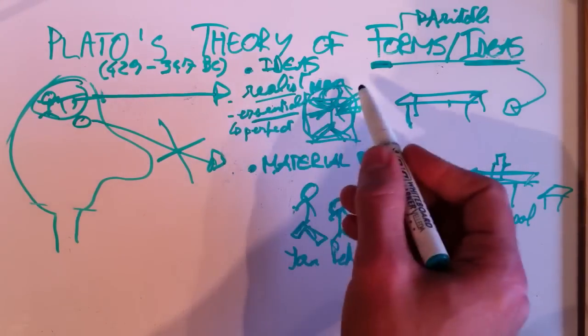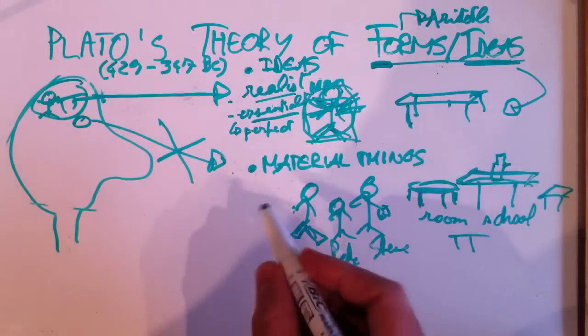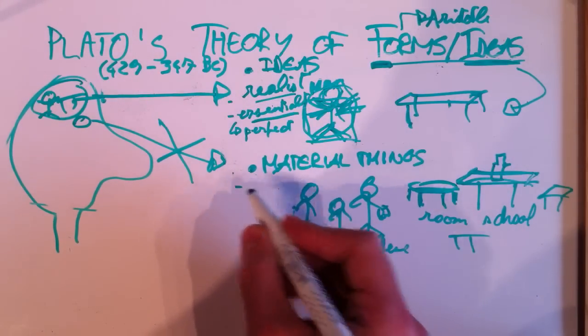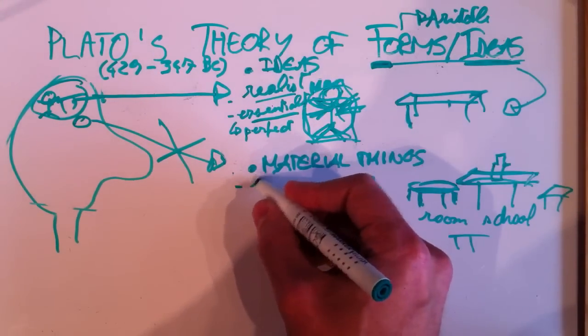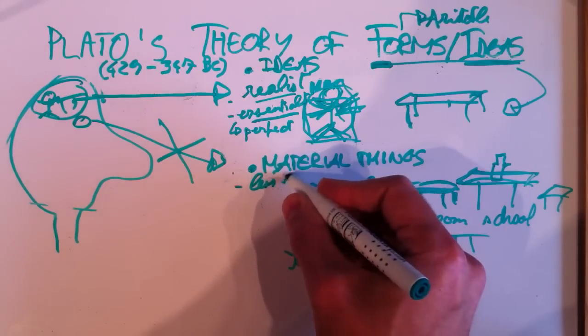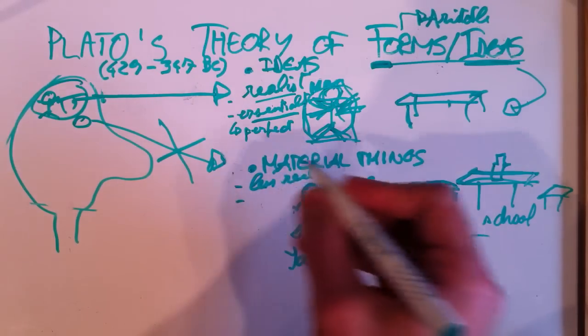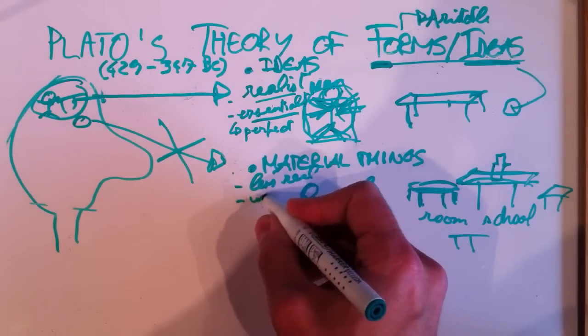Moreover, I kind of forgot to say, while ideas are real, material things are less real. They are less real, according to Plato. They are less real. So, they are less real and they are imperfect.